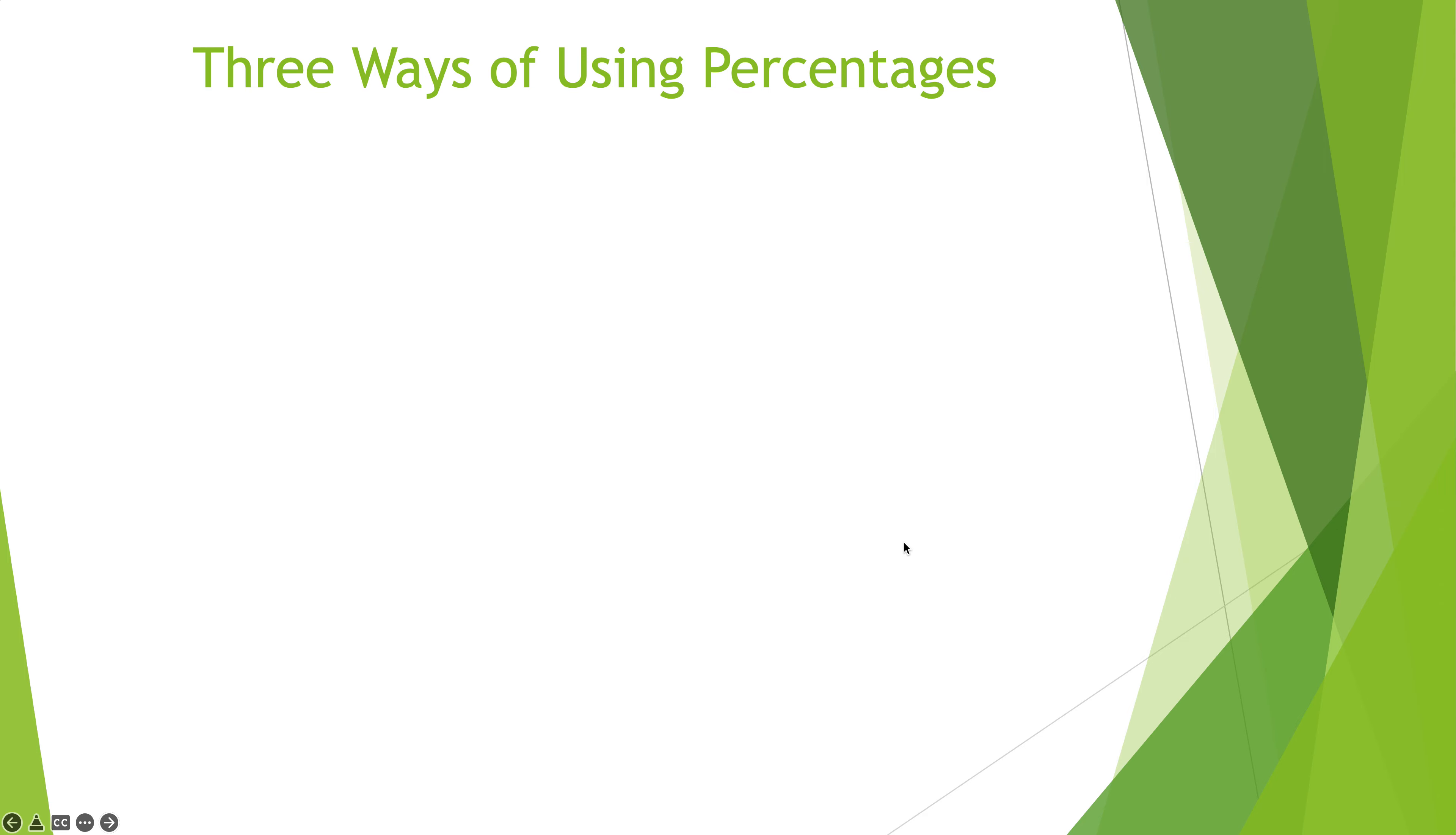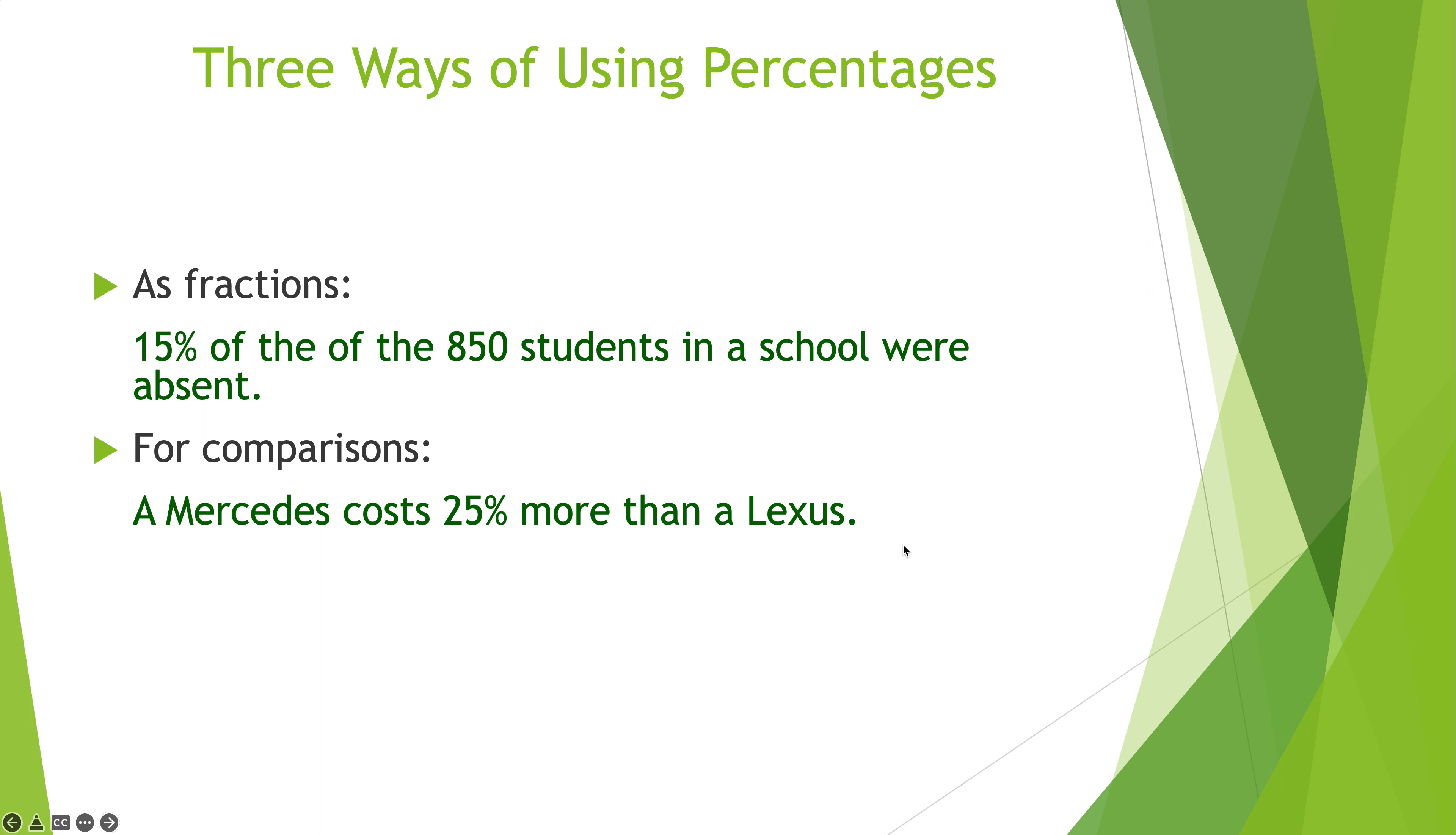Three of the ways that you can use percentages. You can use them as a fraction - 15% of the 850 students in the school were absent. You can use them for comparisons. You can use them to describe change. The price of a stock increased 75% from $50 per share. A Mercedes cost 25% more than a Lexus. That's not the only three ways to use percentages, but that's three of the ways. To be honest, we're in college now, so we don't just do things like 12 out of 15 trout is what percent. We kick it up a notch and we use it involving comparing one thing to another. We'll get started on that on the next slideshow.